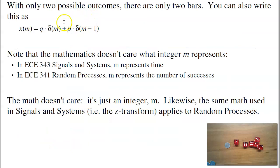With only two possible outcomes, to represent the probability density function mathematically, I would say x(M) is q times delta. This is true only when M equals 0. Delta of M minus 1 is true only when M equals 1. So it gives you P at M equals 1, q at M equals 0. That is this function.